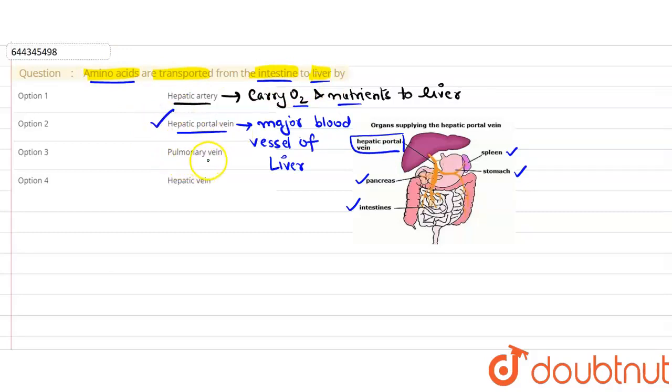It is the blood vessel present in the lungs, not to the liver, so this is also wrong. And hepatic vein, this is the blood vessel of the liver which drains into the vena cava.